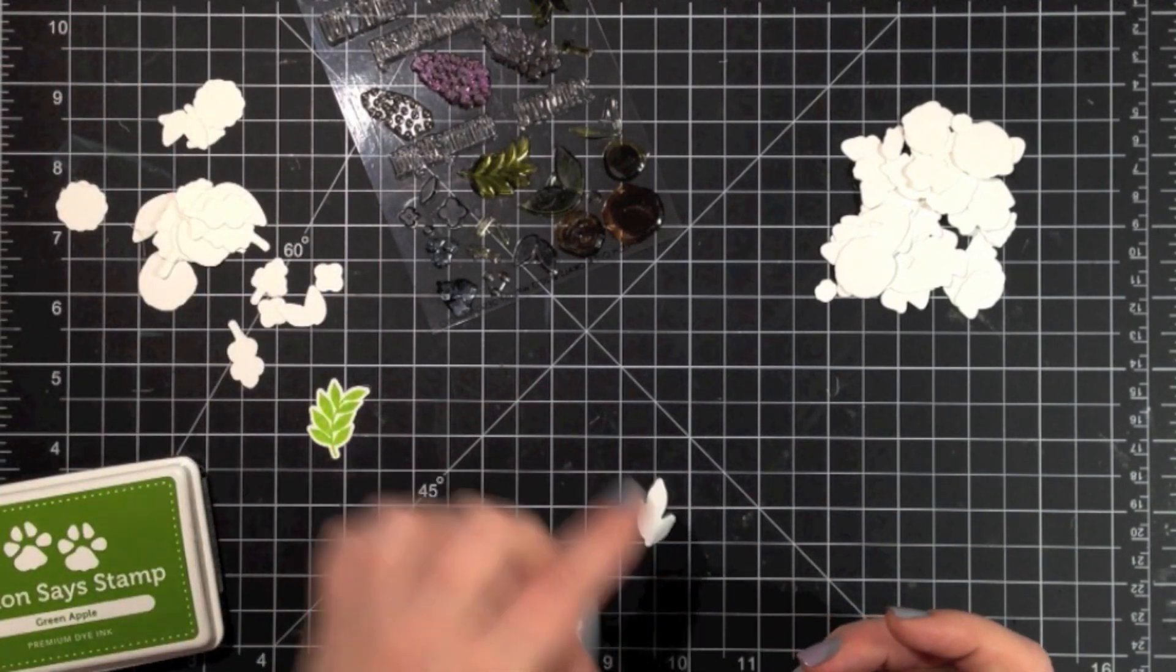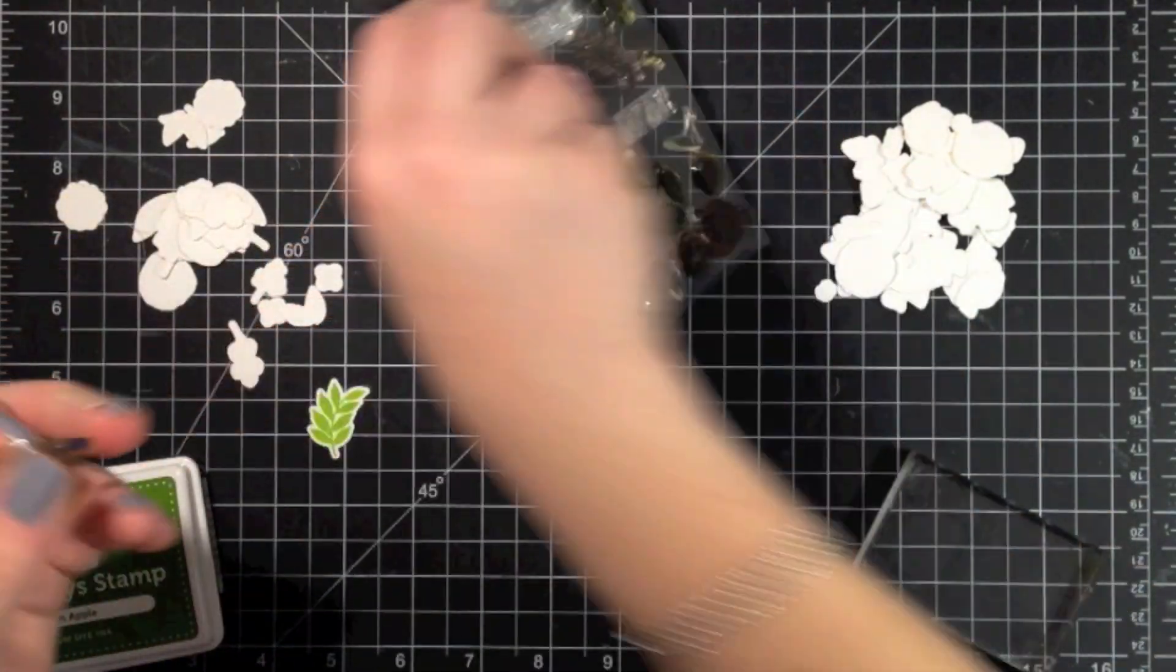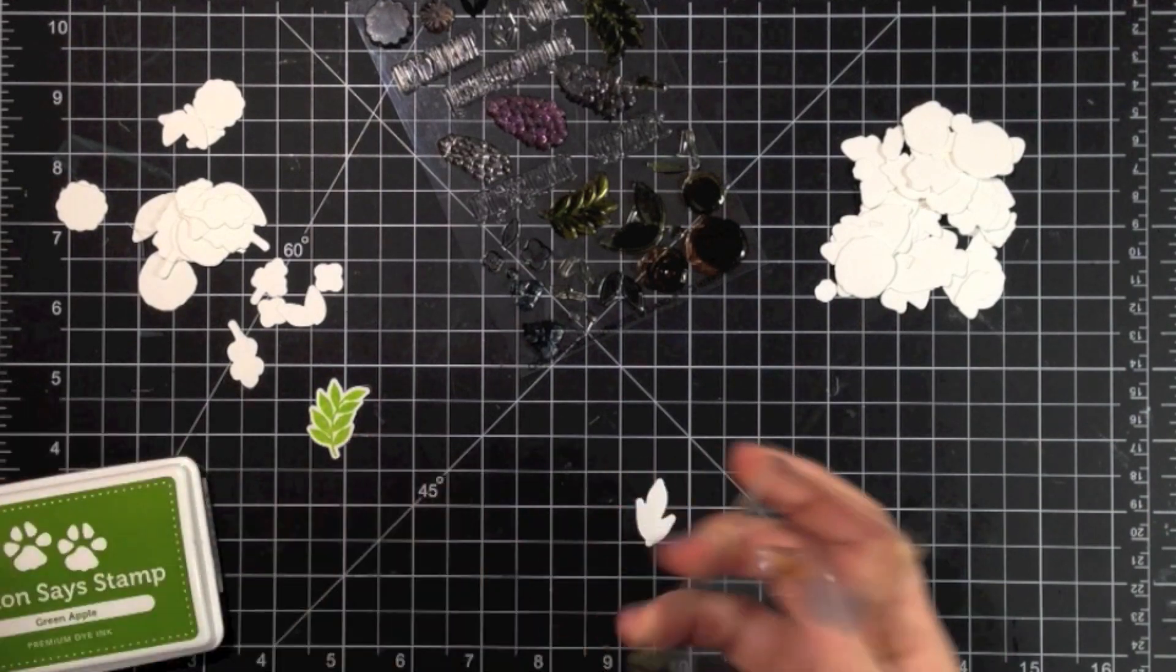So I'm going to go ahead and do some leaf images first. The first one is just a plain leaf, one stamp, that's it. I didn't accent that one at all.